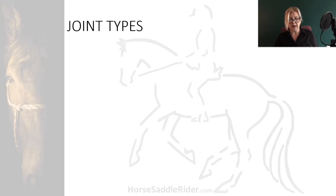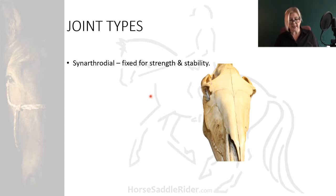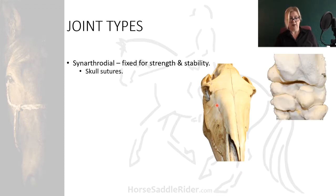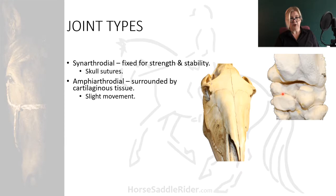Let's first take a look at the three types of joints. Synarthrodial - that's fixed for strength and stability, such as in the skull sutures, suture being another word for stitch. Amphiarthrodial, meaning that it's surrounded by cartilaginous tissue, as we can see in the hock where there are seven separate bones forming the hock joint. There is slight movement in amphiarthrodial joints.